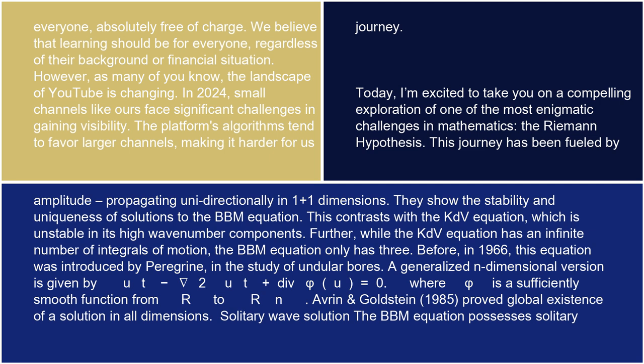Before, in 1966, this equation was introduced by Peregrine in the study of undular bores. A generalized n-dimensional version is given by ut - ∇²ut + div φ(u) = 0, where φ is a sufficiently smooth function from R to Rn.